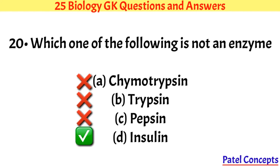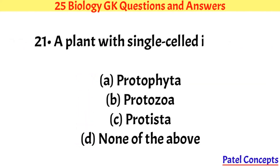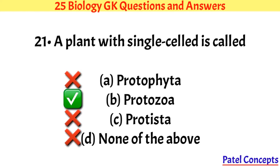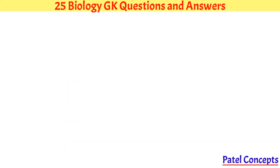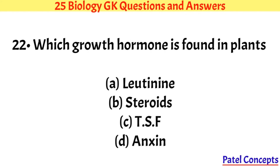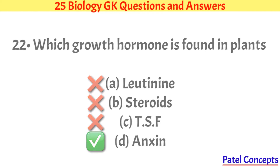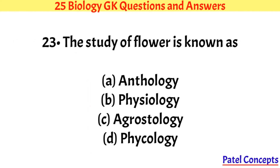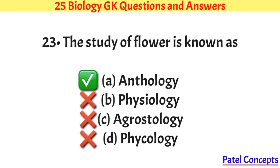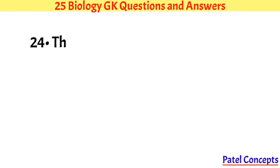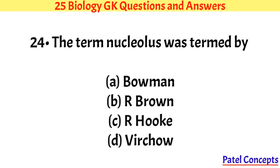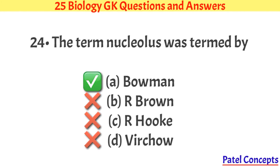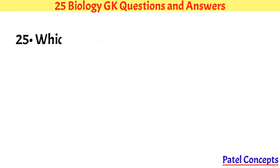Which one of the following is not an enzyme? Insulin. A plant with a single cell is called a protozoa. Which growth hormone is found in plants? Auxin. The study of flowers is known as Anthology.